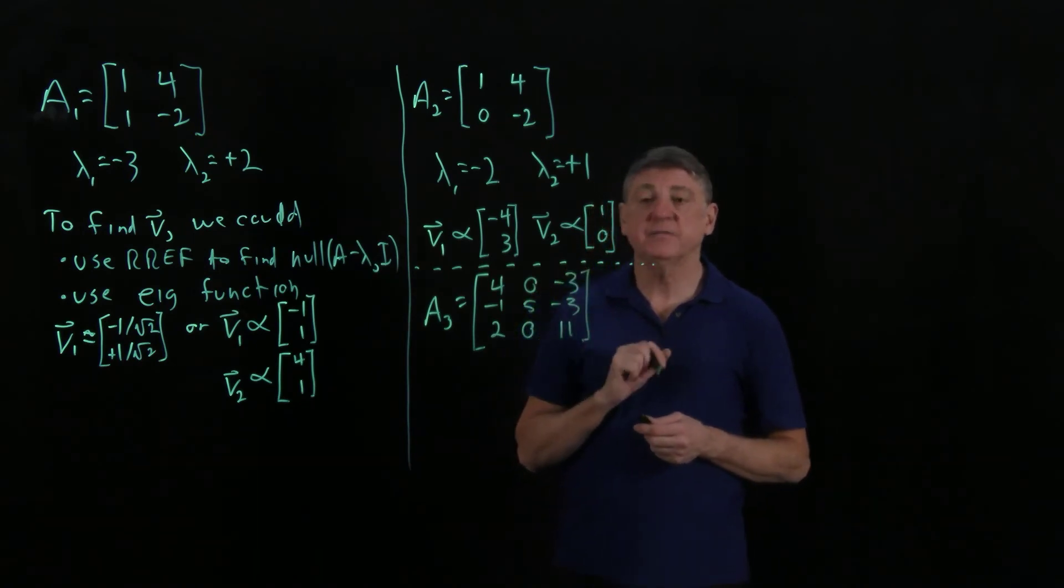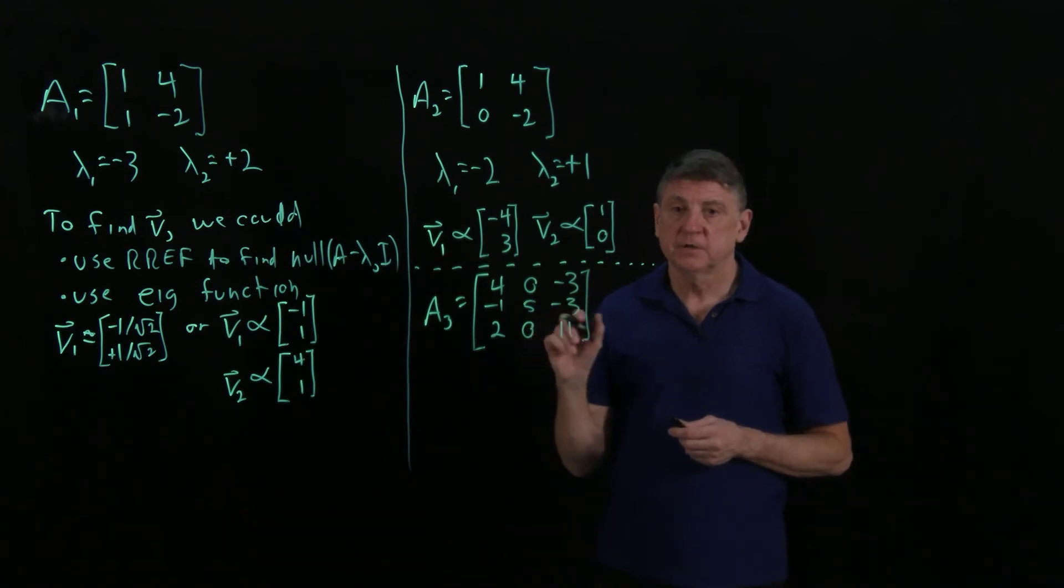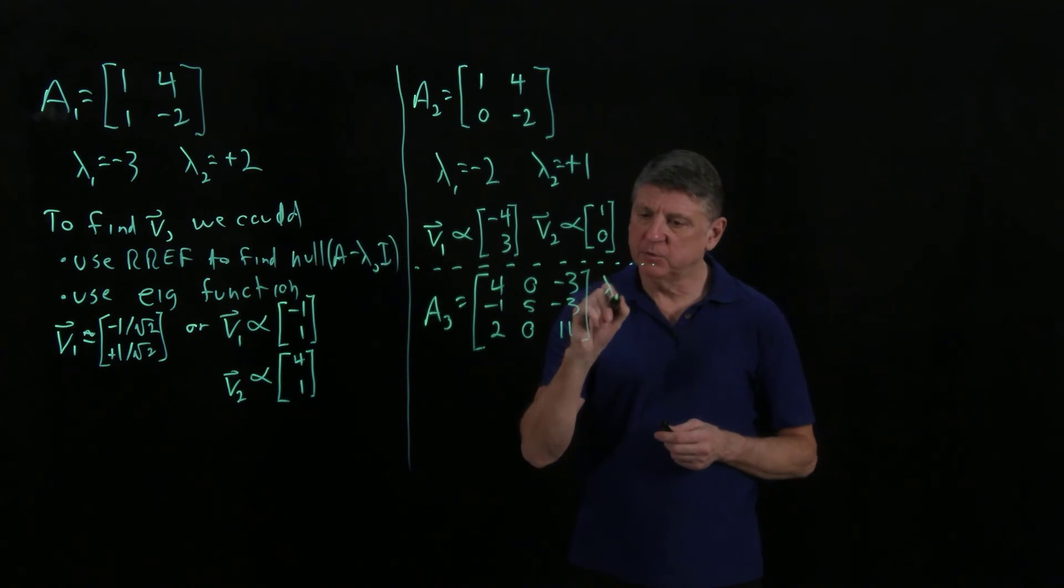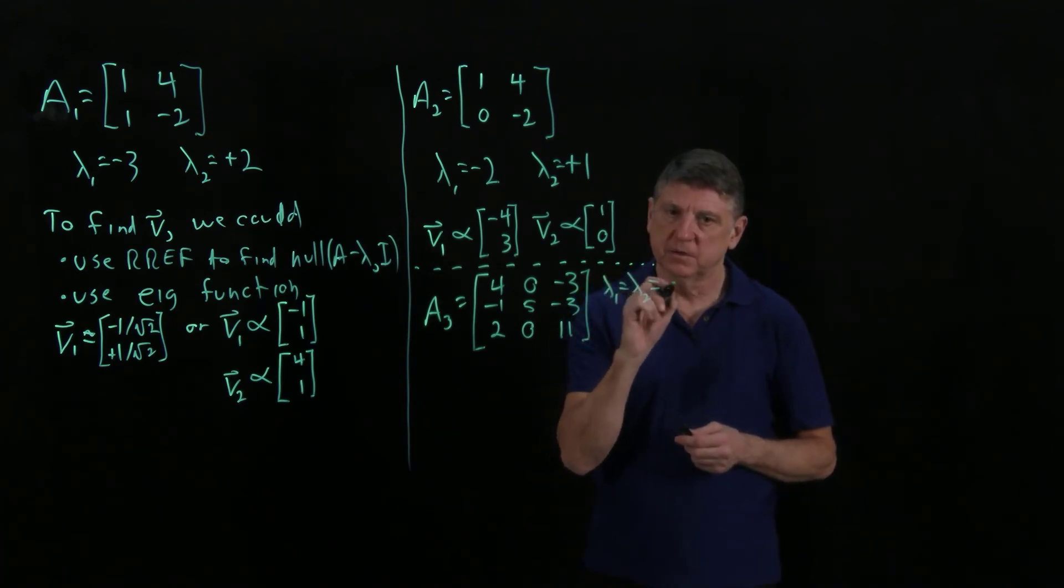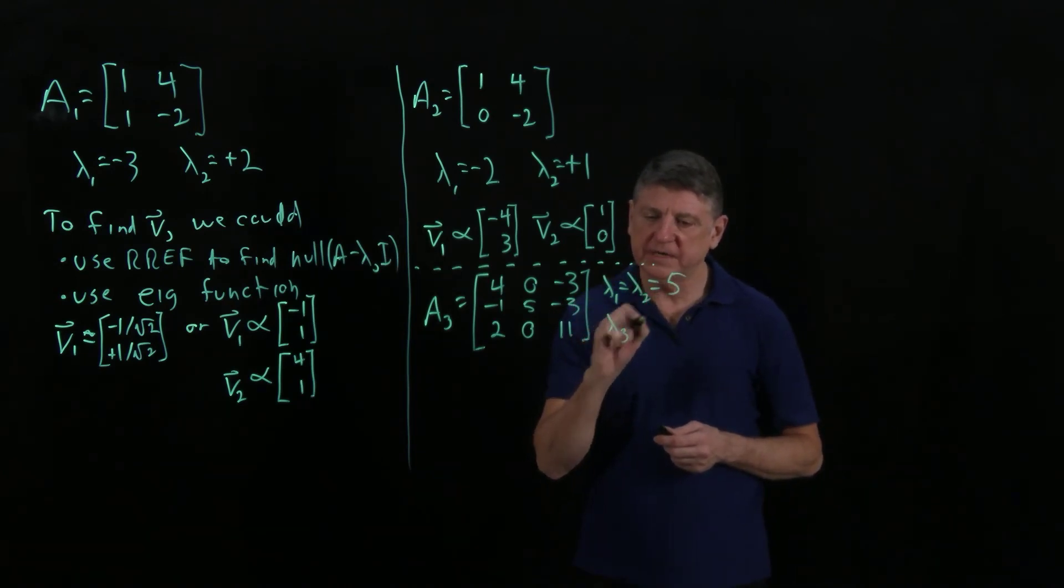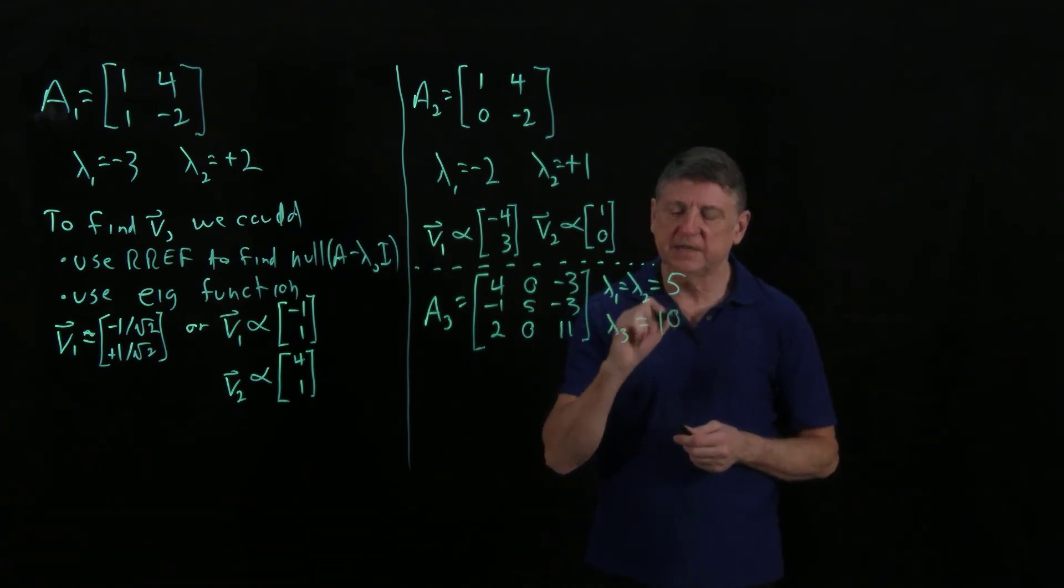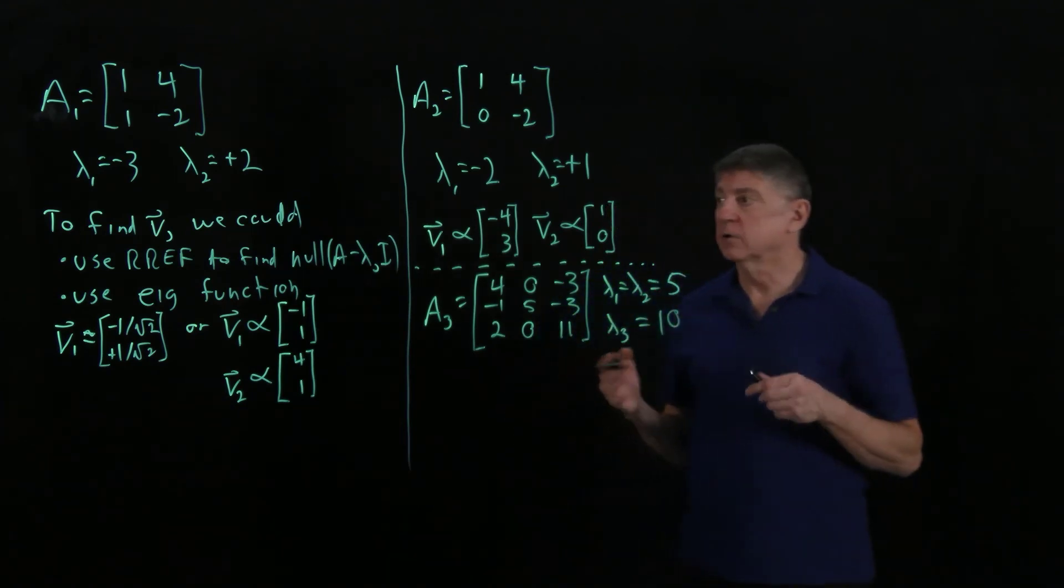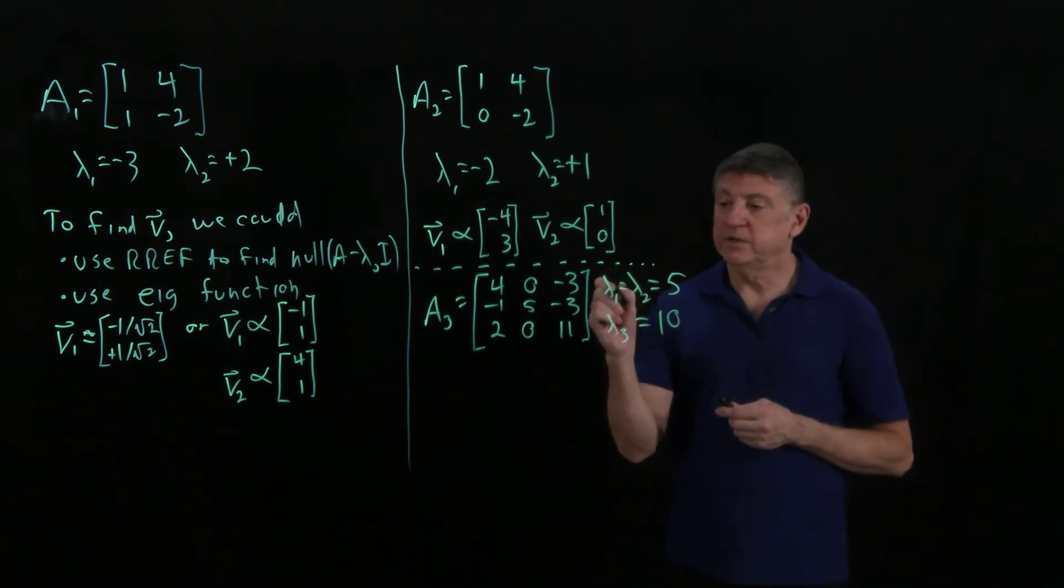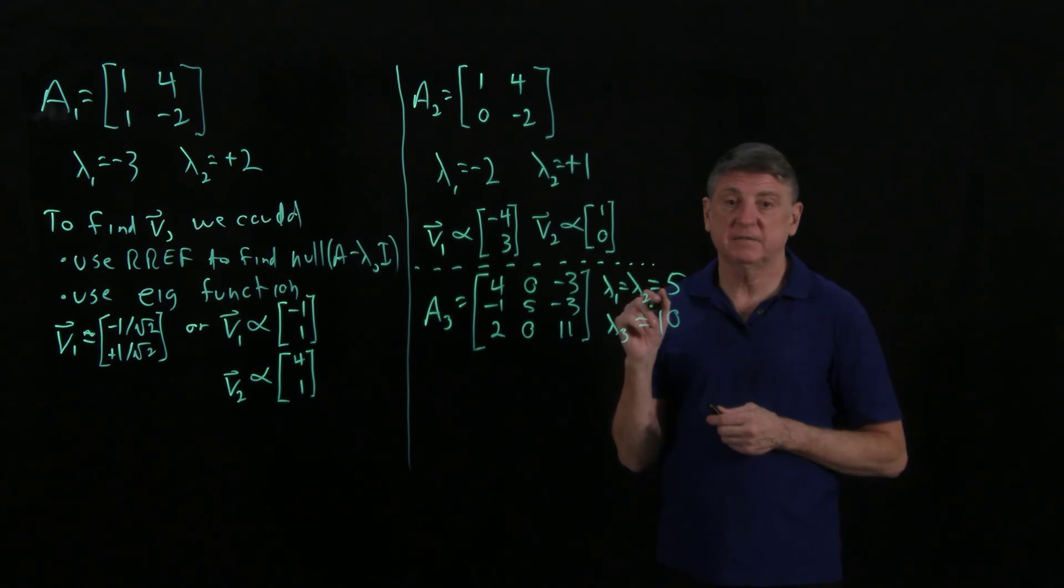I've constructed this matrix carefully so that eigenvalue 1 equals eigenvalue 2 equals 5, I'll omit the plus sign, and eigenvalue 3 equals 10. So here, our sufficient condition is not met. That is, we don't have three distinct eigenvalues. We have a repeated eigenvalue.